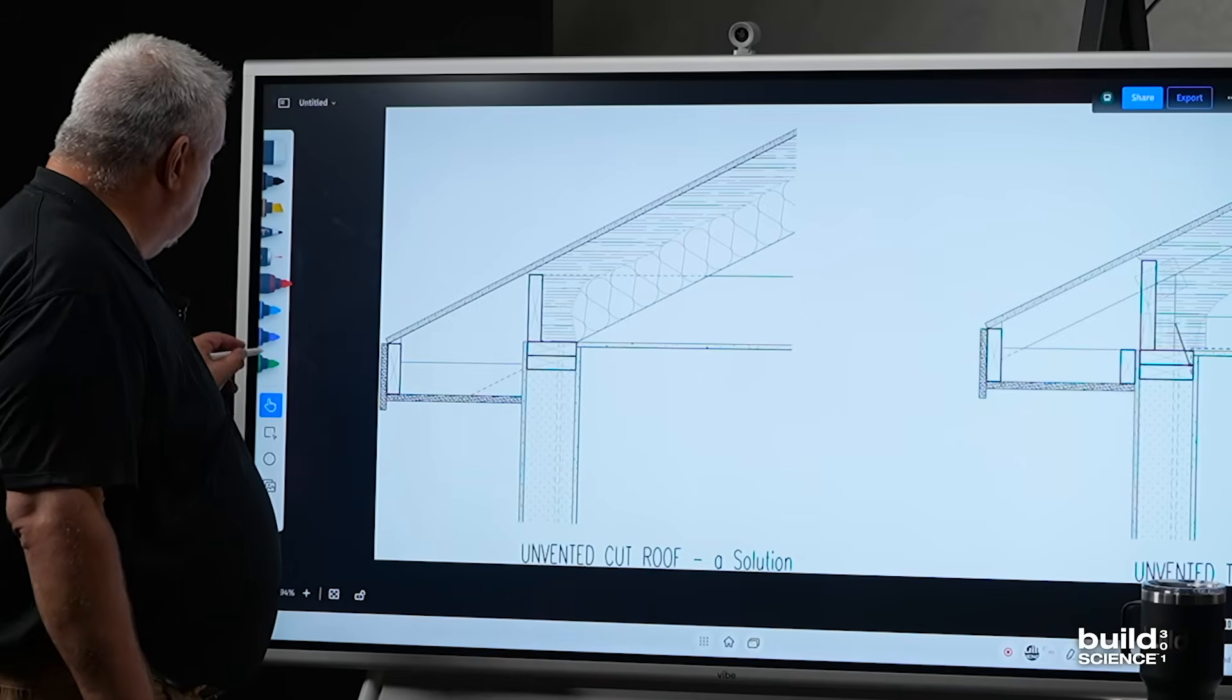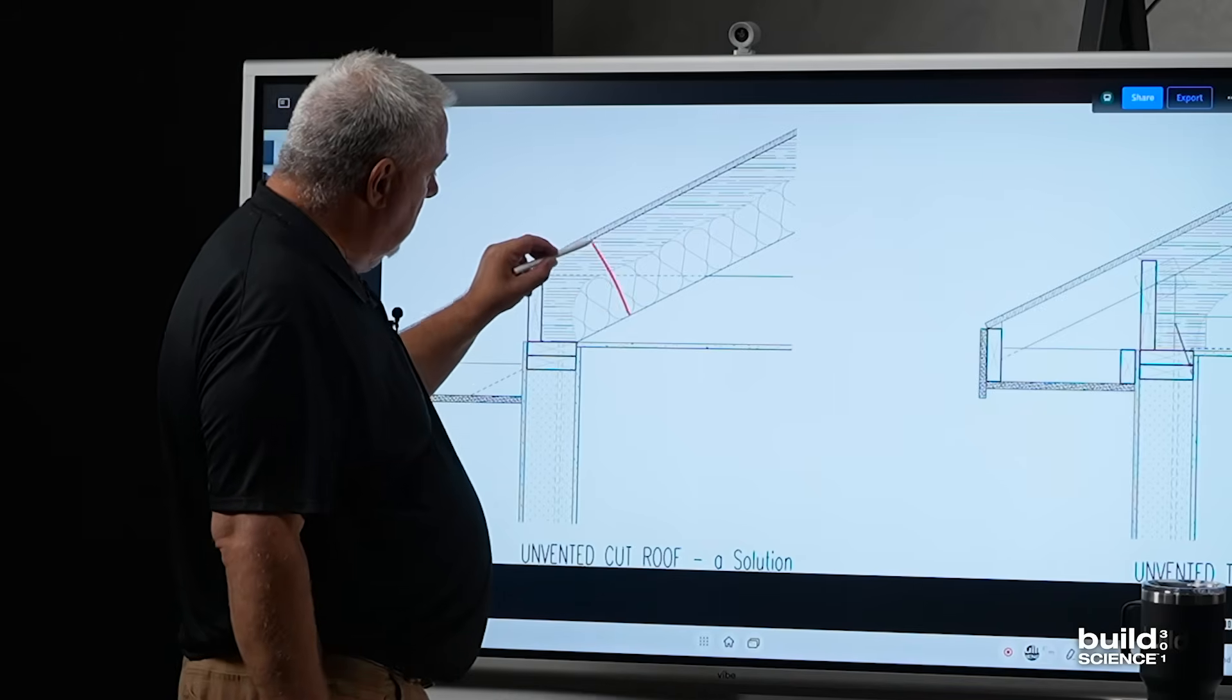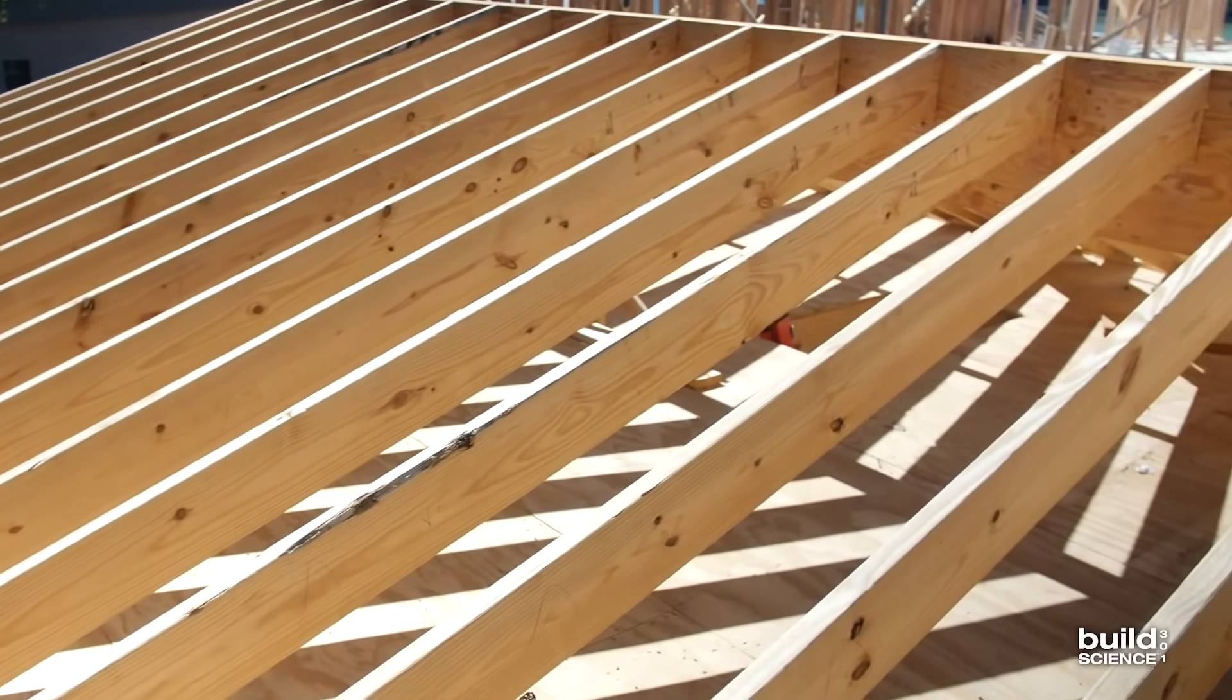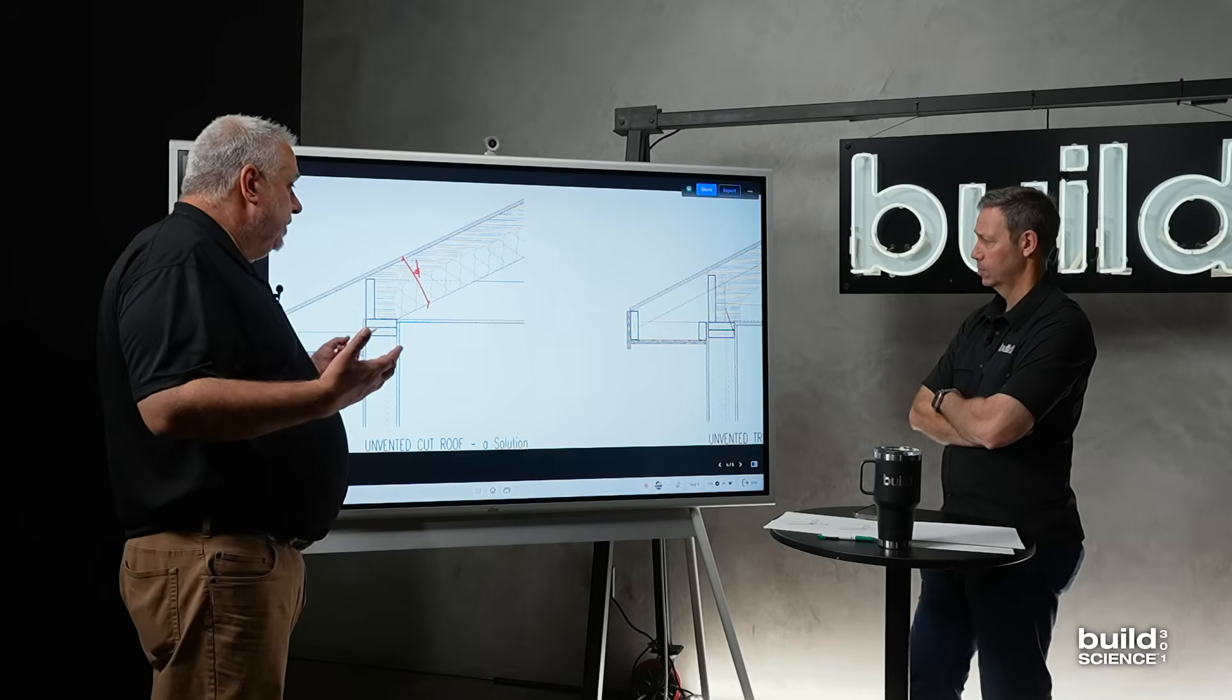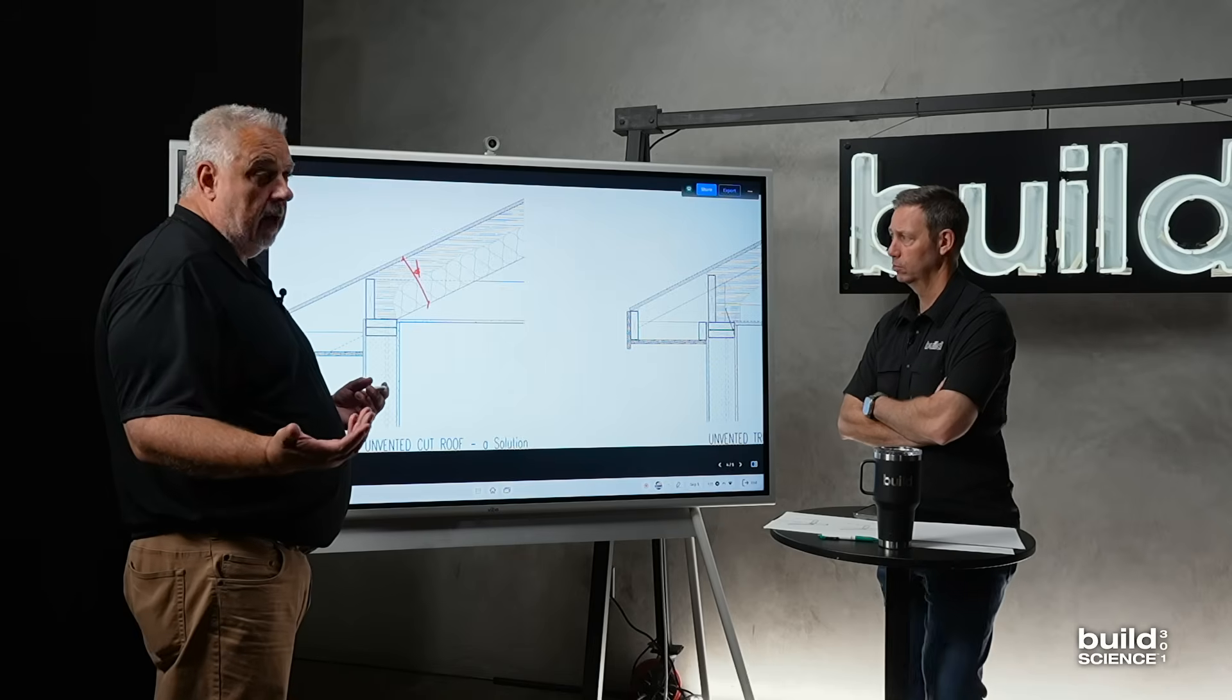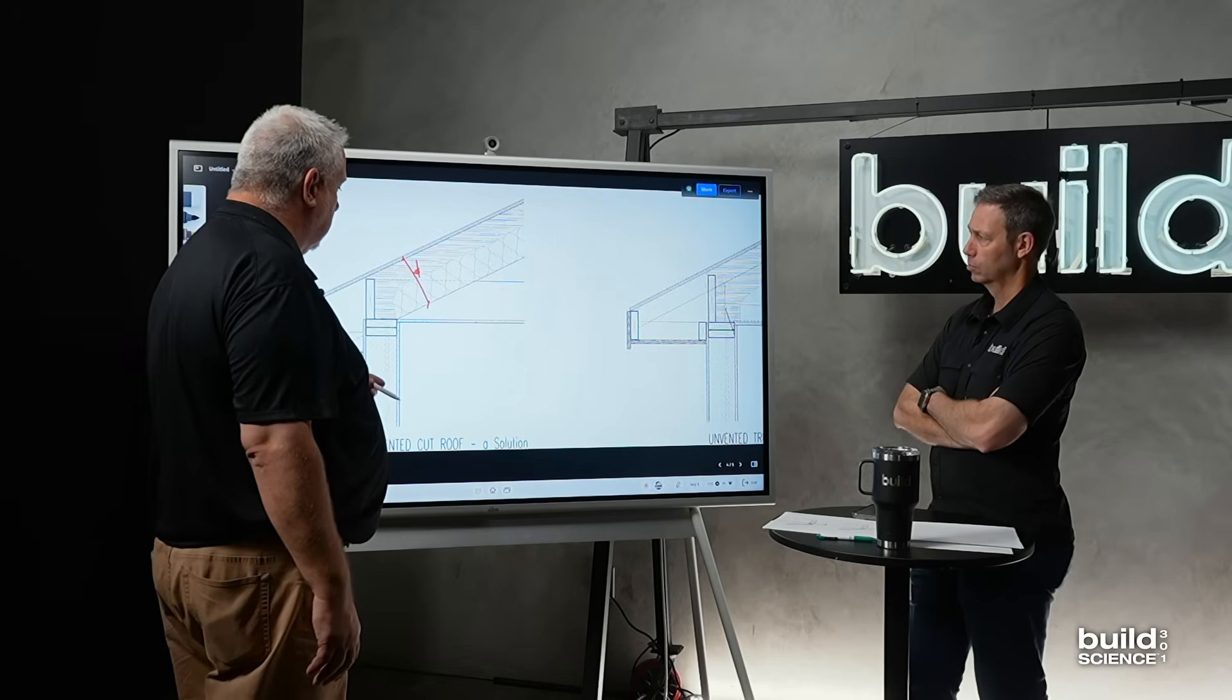So, let's look at the solutions. A solution for an unventilated cut roof. Remember, the cut roof, one of the challenges, the big challenge there is I only have that dimension to work with. And if it's a 2x10, 9.25, 2x12, 11.25, in Alabama, Missouri, Texas, that probably works and works fine. In New England, not so much. In Minnesota, definitely not. So, we need to do other things.